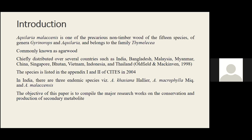The species has become over-exploited, affecting its availability in natural habitats. Therefore, in 2004, the species was listed as an endangered species in Appendix I and Appendix II of CITES. In India, there are three endemic species: Aquilaria khasiana, macrophylla, and malaccensis. Hence, conservation, propagation, and alternative methods for production of unique secondary metabolites are urgently needed.